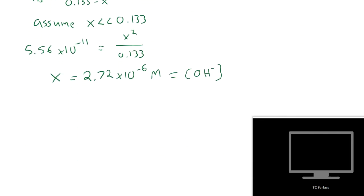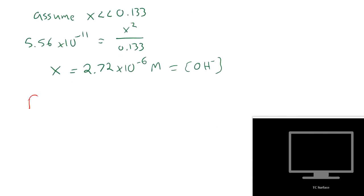OK. Well, we're closer. We're looking for the pH. Let's find the pOH. It's going to be the negative log of 2.72 times 10 to the minus 6. And that's going to be 5.566. The pH is just going to be 14 minus that, 5.566. And you end up with 8.43.